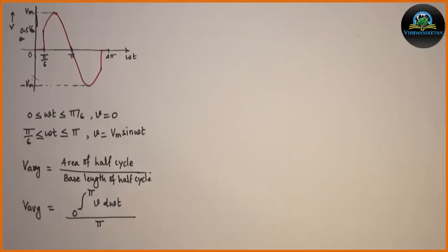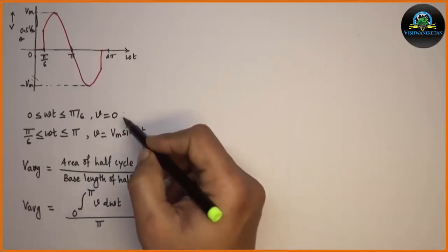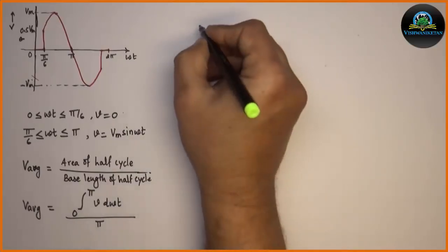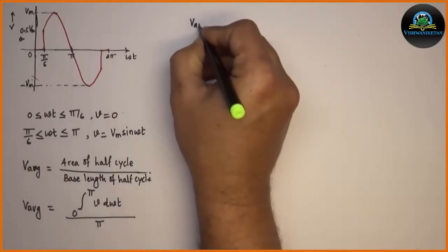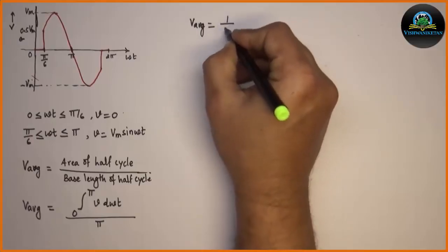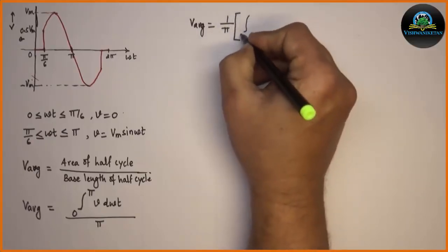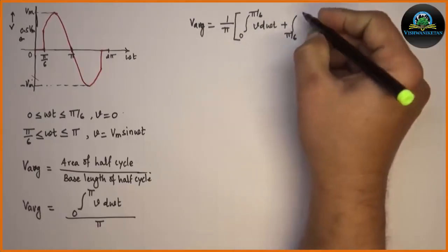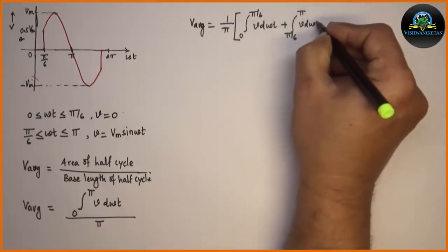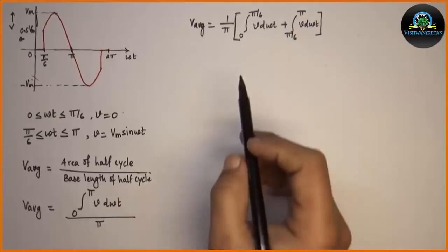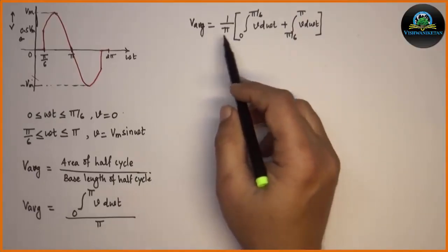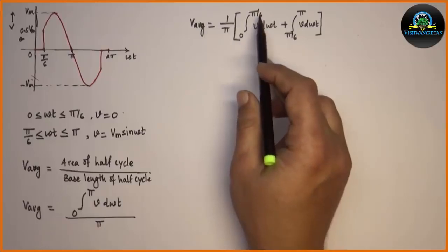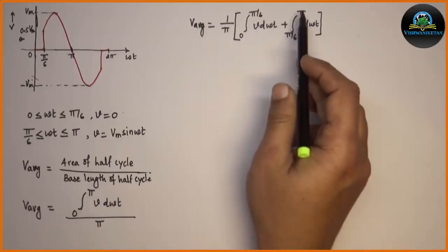This can be simplified and we substitute the value of V for two intervals which we have considered. We get the further equation. Hence we have modified the equation with two intervals: 0 to pi by 6 and pi by 6 to pi. Let us put the values of V for both intervals.